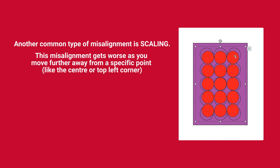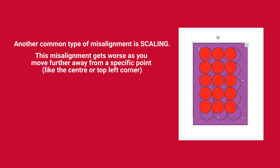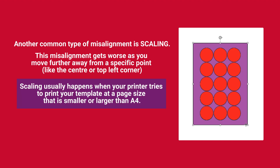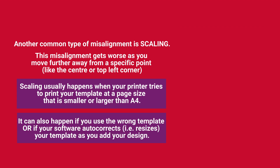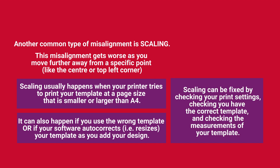Scaling misalignment gets worse as you move further away from a specific point, like the center or top left corner. Scaling usually happens when your printer tries to print your template at a page size that is smaller or larger than A4. It can also happen if you use the wrong template, or if your software autocorrects or resizes your template as you add your design. Scaling can be fixed by checking your print settings, checking you have the correct template, and checking the measurements of your template.